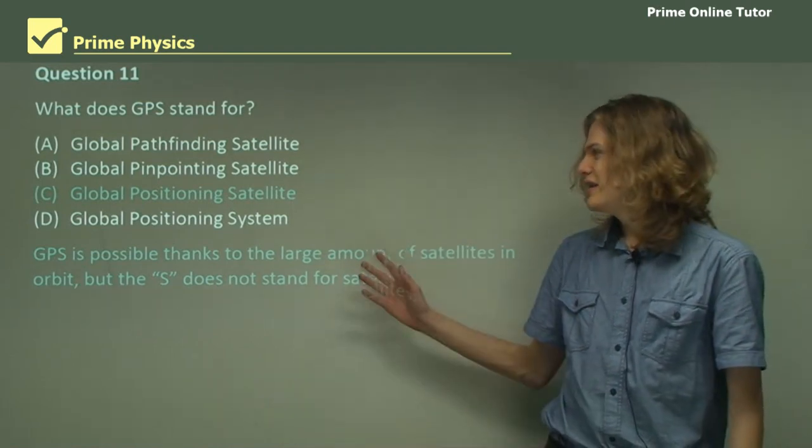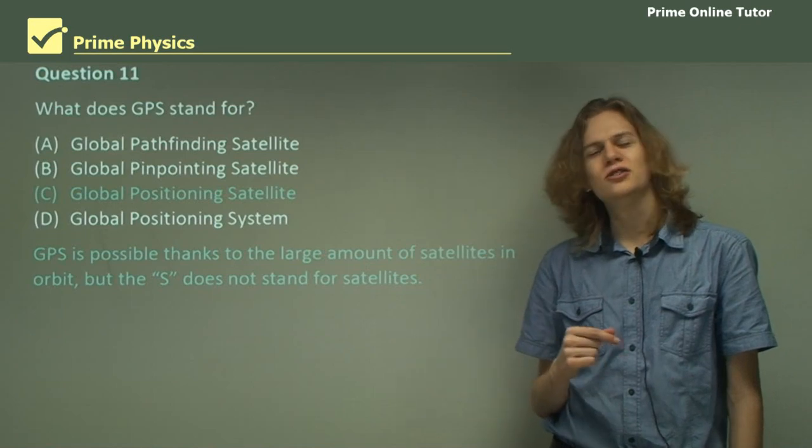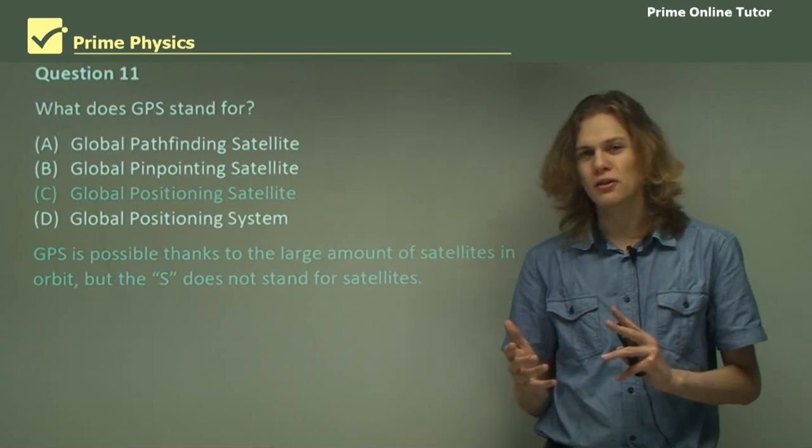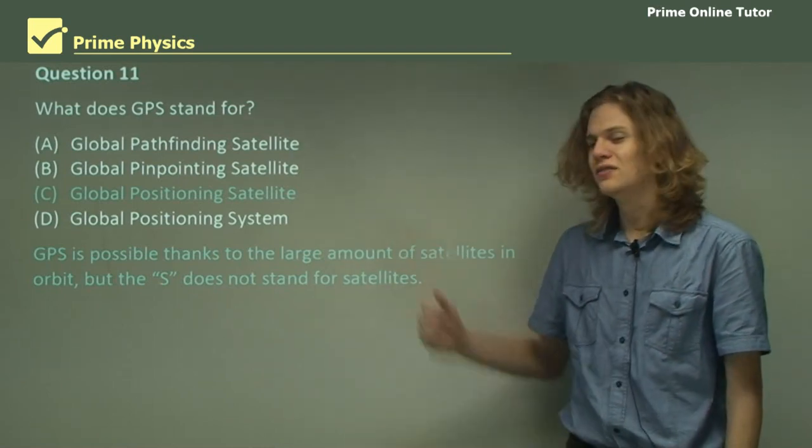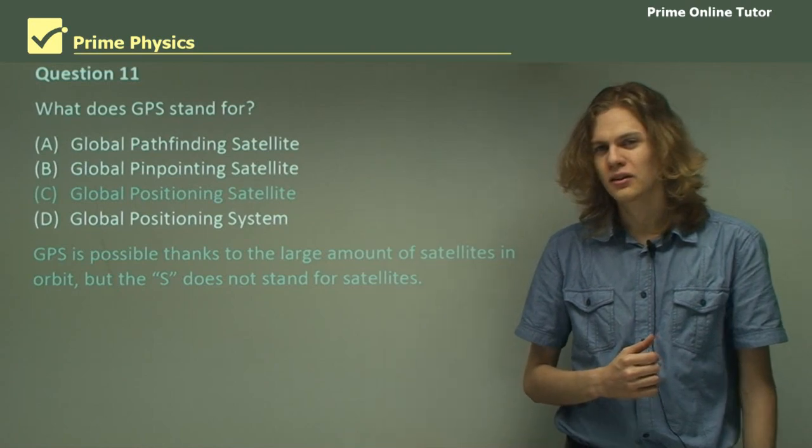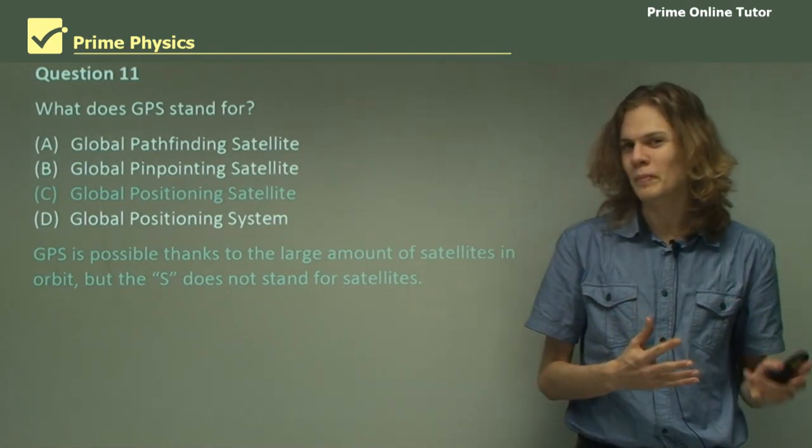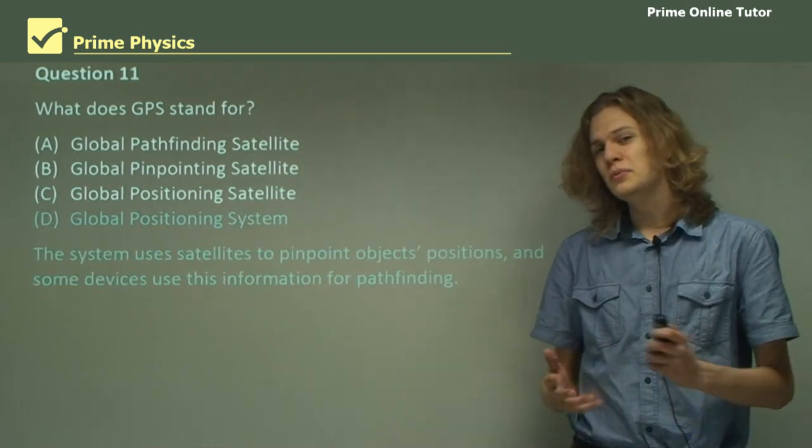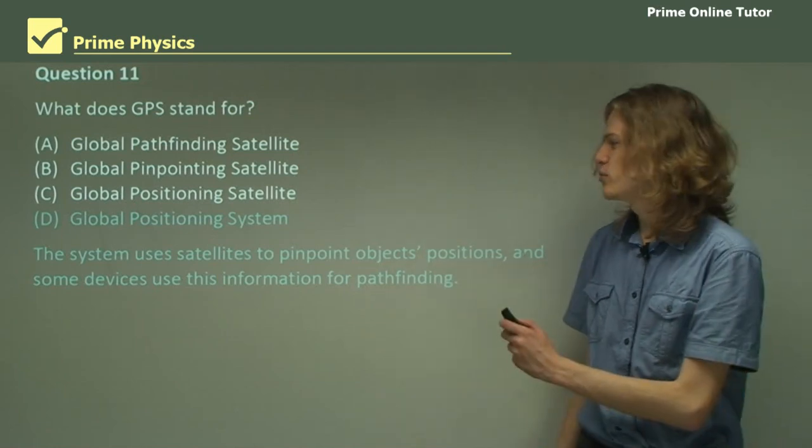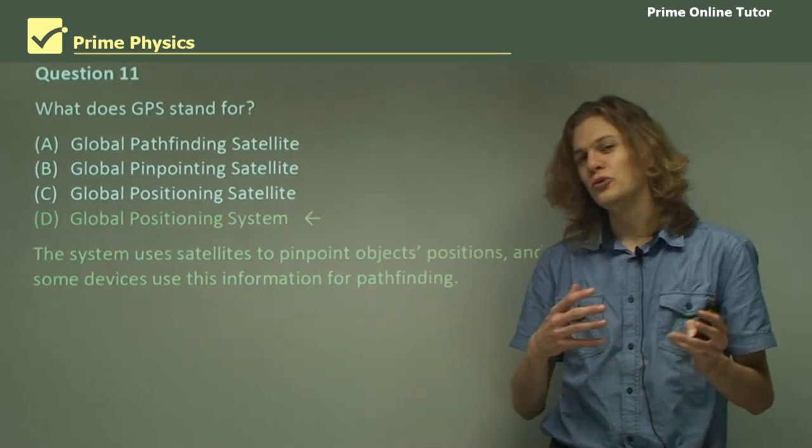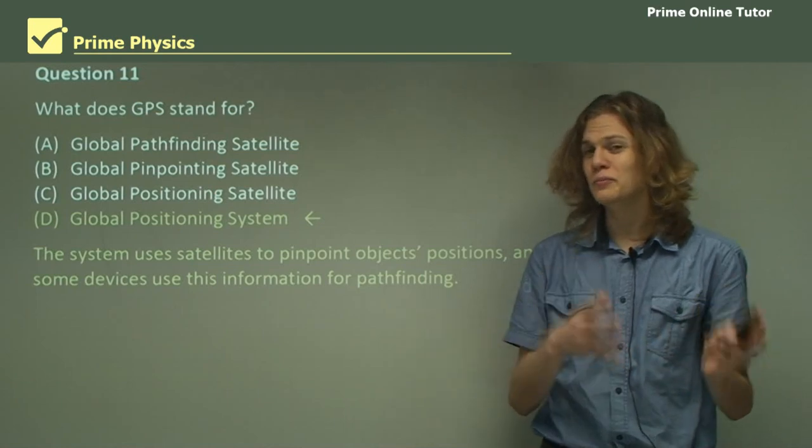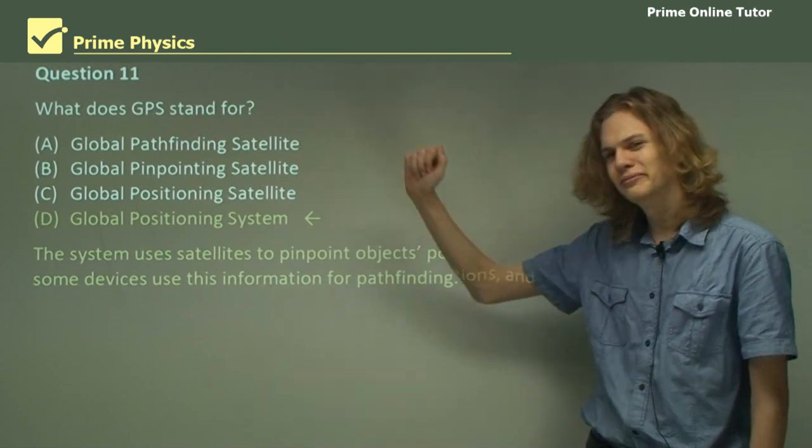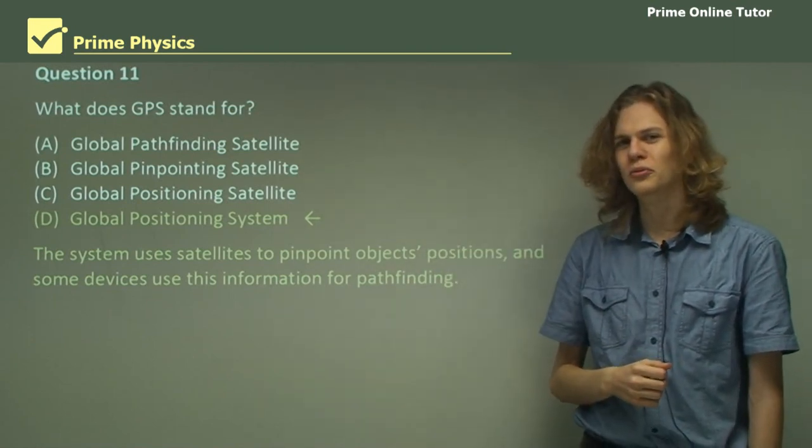The problem is, the S of GPS does not stand for satellite. It consists of a whole bunch of satellites orbiting the Earth. That's not a single satellite, that's 24 different satellites. So it's not just a satellite, it's a system of satellites. So GPS stands for Global Positioning System, and D is the right answer. The system will use satellites to pinpoint the position of an object on the surface of the Earth, and then we can find paths to it by using appropriate maps and technology.